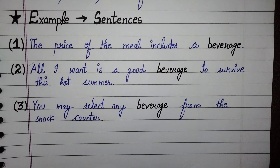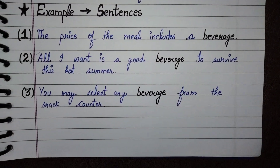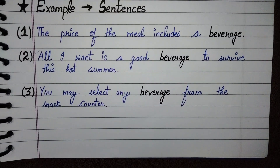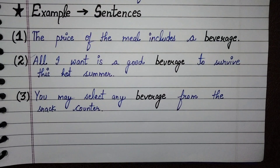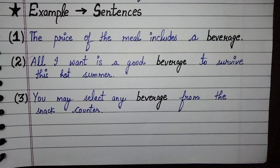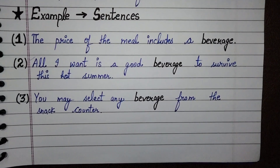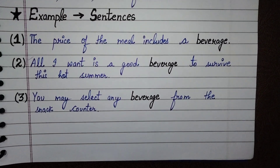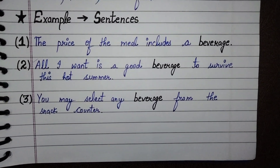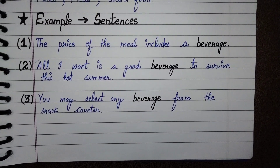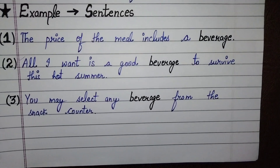Now, example sentences. First sentence is: the price of the meal includes a beverage. Yani ki meal ki price mein ek beverage, yani ki pe-padart bhi include hai, shamil hai. Second sentence is: all I want is a good beverage to survive this hot summer. Yani ki mujhe agar kuch chahiye toh ek acha sa beverage, yani ki ek acha sa pe-padart, drinkable liquid chahiye — isse garmi mein survive karne ke liye, to survive this hot summer.